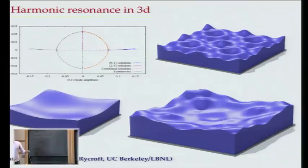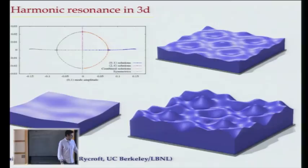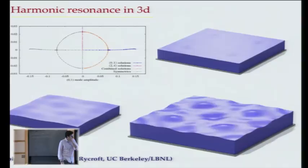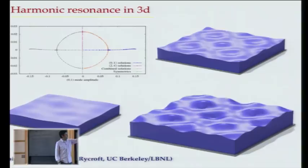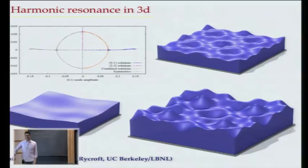I've done that in 3D as well — work with Chris Rycroft where we found a similar structure to what I showed in 2D. This time-periodic solution and a pure-mode time-periodic solution happened to have very similar periods, so we superimposed them and minimized to find a composite time-periodic solution with features of both. So you have lots of non-uniqueness in these solutions.